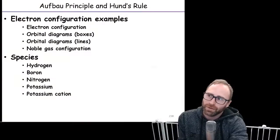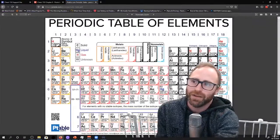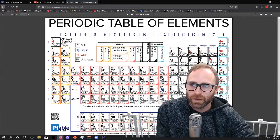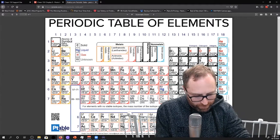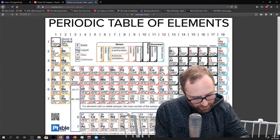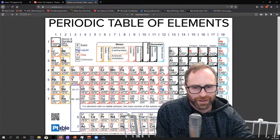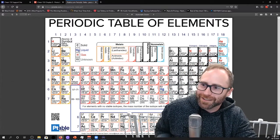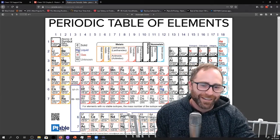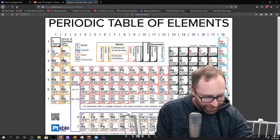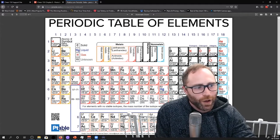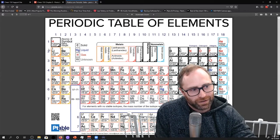If we go to the periodic table, we see boron is right here. First off, boron has five electrons. Also, boron is here in the second row.